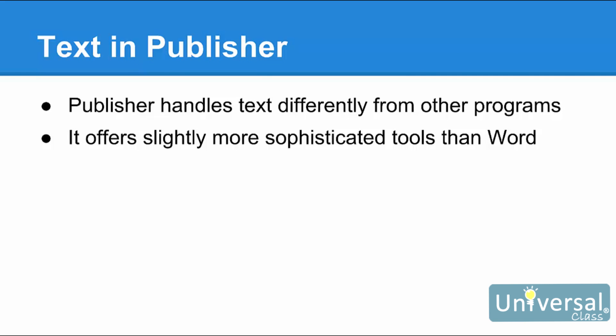The way that Publisher handles text is what separates it from simple word processing programs like Microsoft Word. That isn't to say that Word isn't complex or that you can't create impressive, visually interesting publications with it. But because Publisher is typically used to deliver professional quality publications to commercial printers, it offers slightly more sophisticated tools for typesetting. For instance, tracking and kerning options are more complex in Publisher than in Word. Tracking refers to the spacing between letters in entire blocks of text, while kerning refers to the spacing between two individual letters.